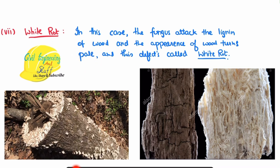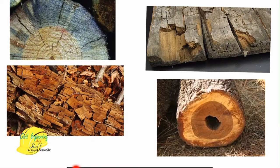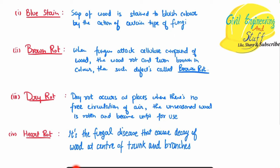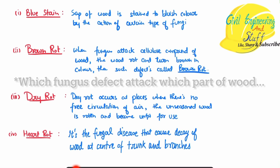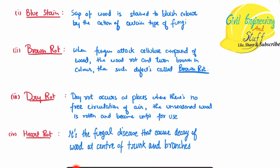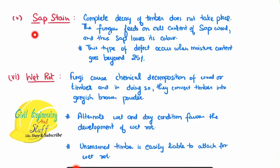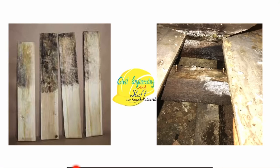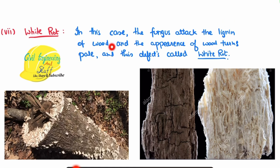One thing to always remember is which part of the wood each fungal defect attacks. In blue stain, the sap of the wood is attacked. In brown rot, the cellulose compound is attacked. In heart rot, the central part of the wood is attacked. In sap stain, the sap of the wood is attacked. In white rot, the lignin of the wood is attacked. This is a very important thing to remember.